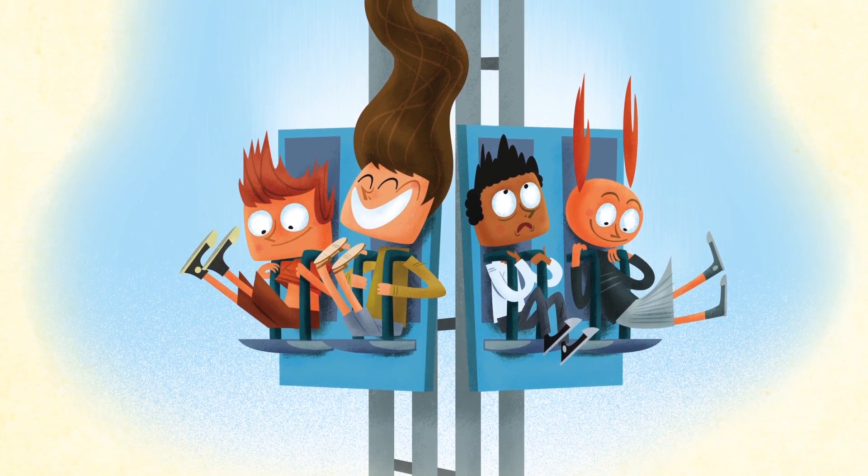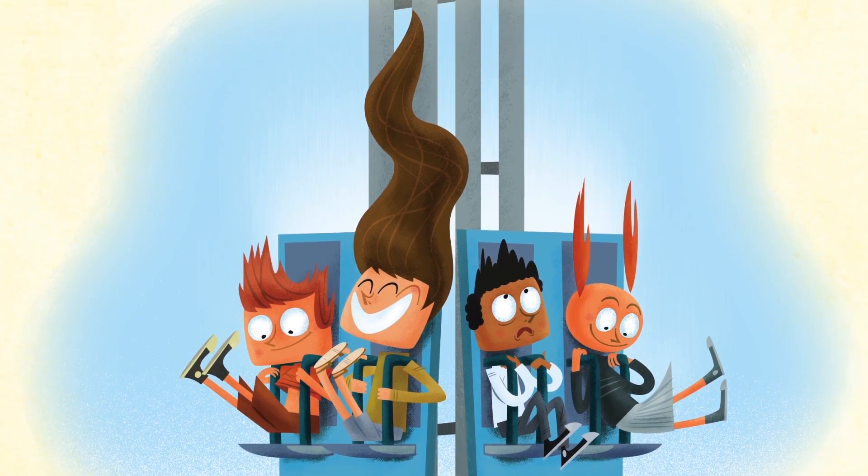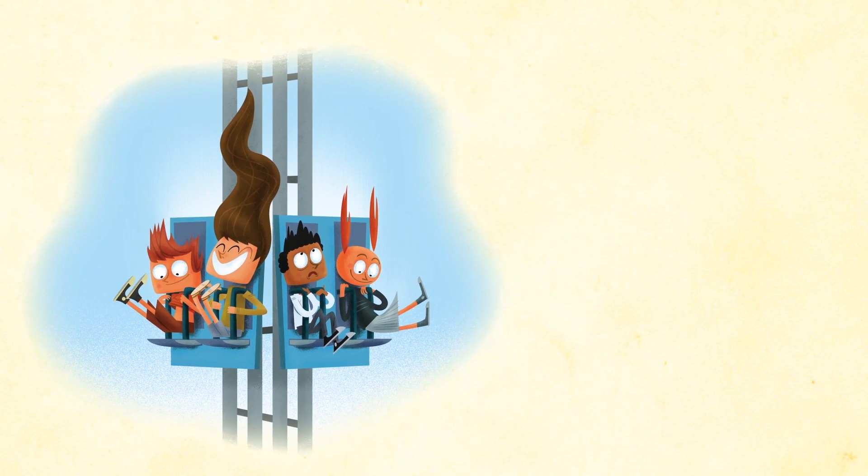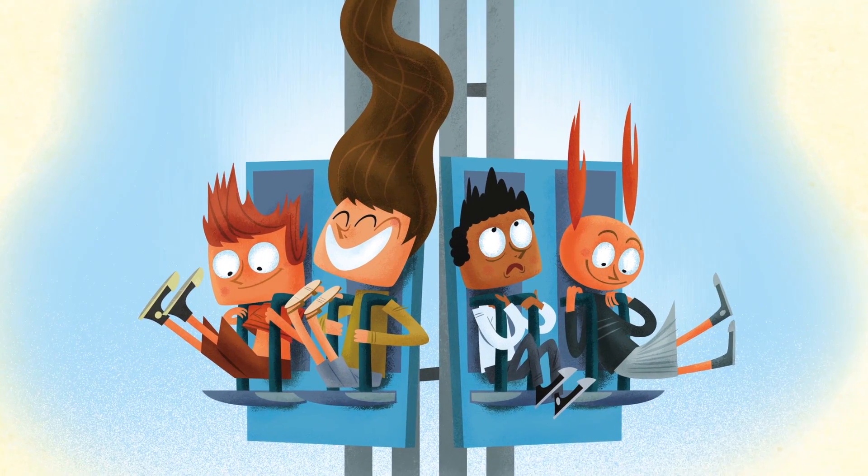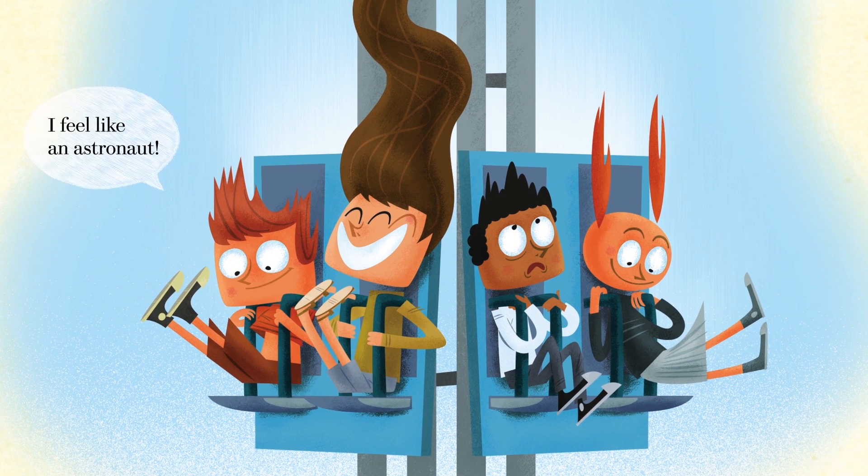The freefall ride is like a roller coaster that goes only up and down. After you're strapped into your seat, you're lifted high above the ground, then you suddenly drop, pulled down by gravity. During the drop, you feel a gentle bump. You feel like an astronaut floating in space.